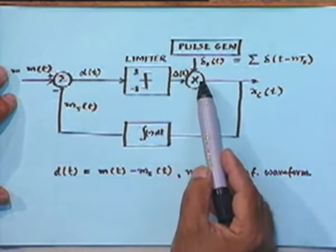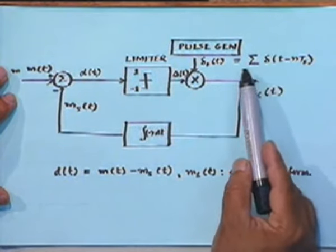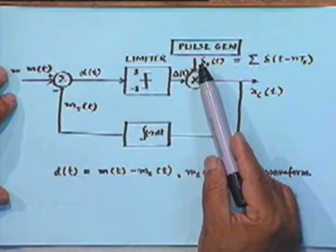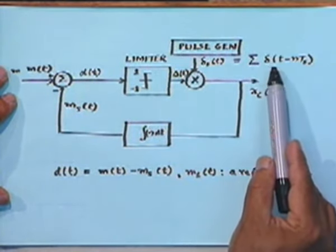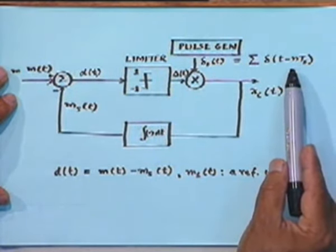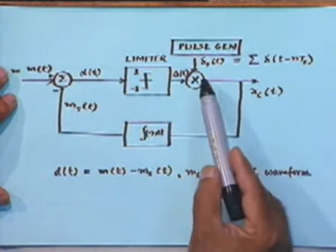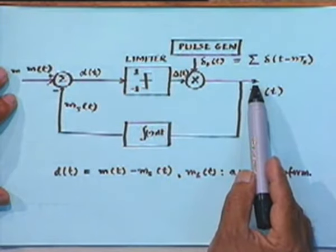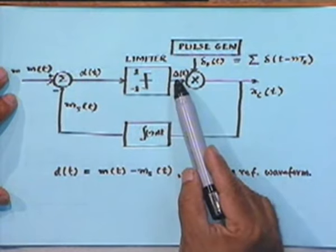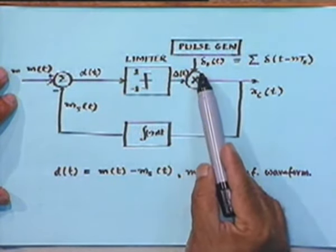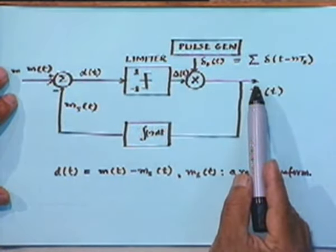This δ(t) is multiplied with an impulse train coming from a pulse generator. Mathematically that is represented as Σ δ(t − nT_s), where T_s represents the period of the impulse train. These two are multiplied and that is the output of your delta modulator. So the delta modulated output is a sequence of positive and negative impulses — each impulse is either of a positive amplitude of fixed value or of negative polarity.